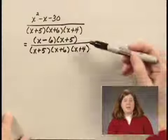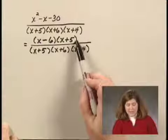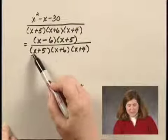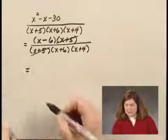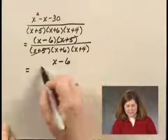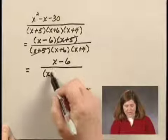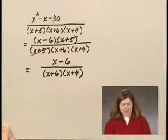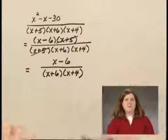Now the numerator is factored and the denominator is factored, so I look for common factors. x plus 5 is a factor that's in both the numerator and the denominator, so I can cancel them — think of removing a factor equal to 1. I can write the simplified form: what's left in the numerator is x minus 6, over the factors left in the denominator, x plus 6 times x plus 4. There's no need to multiply this out — we can leave it in factored form. This is the simplified form of the answer.